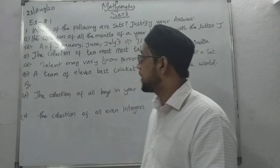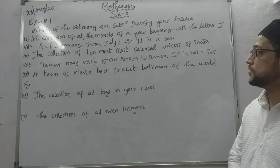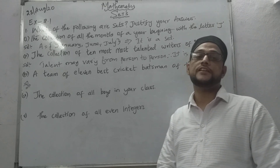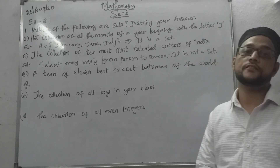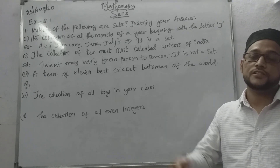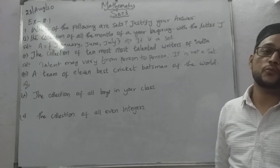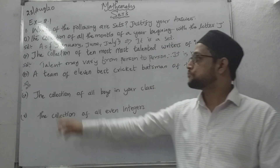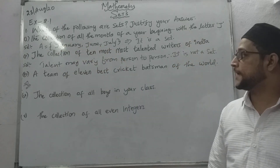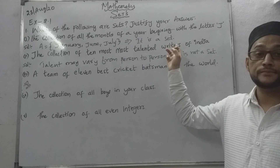Now, see here, first: the collection of all the months of the year beginning with the letter J. We can easily identify whether it is a set or not, because the hint is the letter J. So we can easily write the set: January, June, July. Therefore, it is a set.